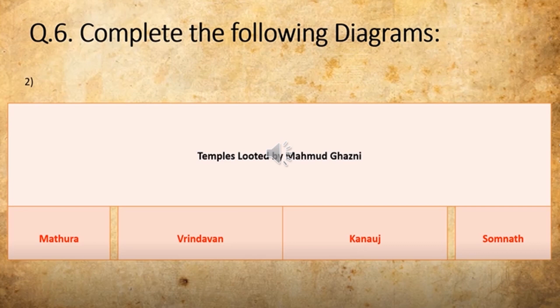We have completed all the objective type of questions: question number 1 — name the following; question number 2 — find the odd man out; question number 3 — complete the timeline; question number 4 — select the appropriate alternative; question number 5 — complete the following table; and question number 6 — complete the following diagram.